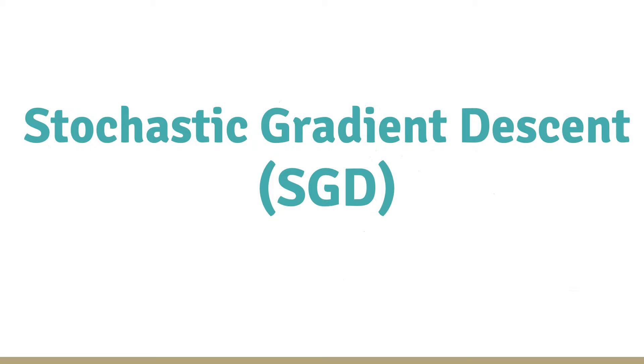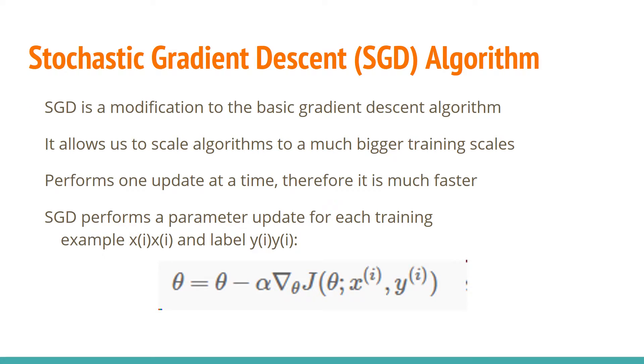Now let's talk about the next algorithm, SGD. Let's talk about stochastic gradient descent. SGD is a modification to the basic gradient descent algorithm. It allows us to scale algorithms to much bigger training sets. It performs one update at a time, therefore it's much faster. Fundamentally a better optimizer and is the only one that's fast enough. SGD performs a parameter update for each training example X and label Y. Good thing about SGD algorithms is it's efficient and easy of implementation. The bad thing about SGD algorithms is it requires a number of hyperparameters such as the regularization parameter and the number of iterations. SGD is sensitive to feature scaling.